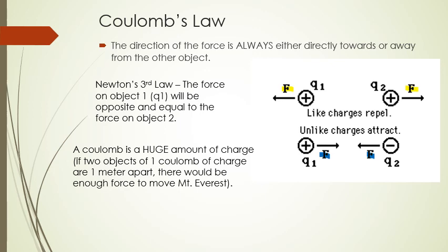A coulomb is a massive amount of charge. It's actually a derived unit — not a fundamental unit — derived from an amp, which is the amount of electrical current running through a wire. A coulomb is a huge amount of electrical charge. If you took two objects with one coulomb of charge and put them about one meter apart, that would be enough force to move Mount Everest.